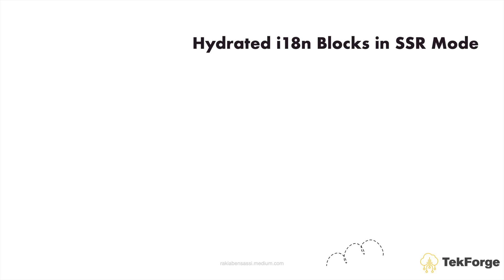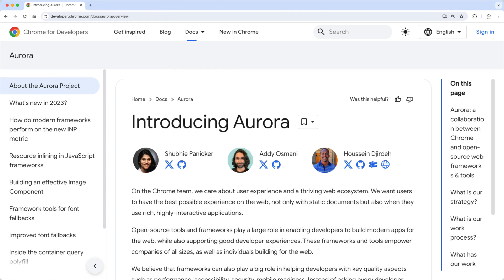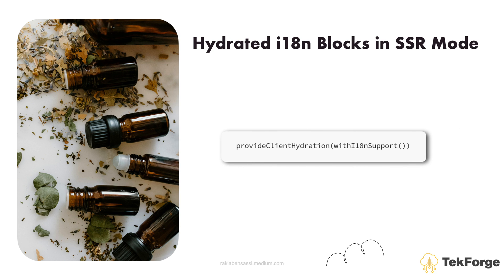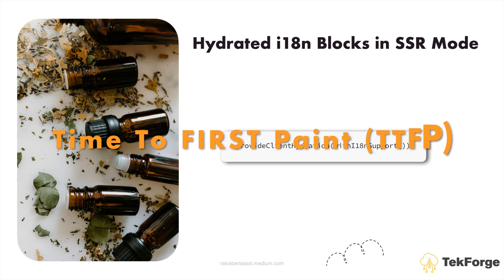The collaboration with Aurora has brought hydration support for i18n blocks, enhancing internationalization in server-side rendered (SSR) applications. You can use Provide Client Hydration with i18n support. This feature ensures that translations are rendered correctly on the server, which reduces the time to first paint (TTFP).